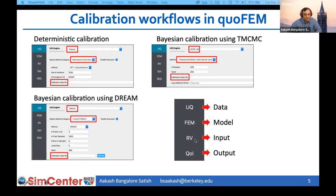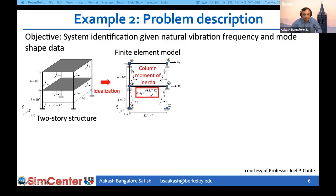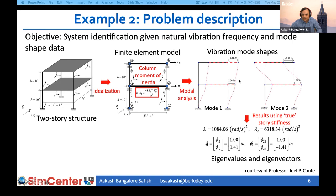In all calibration workflows, there are four components defining the problem: the calibration data provided in the UQ panel, the model defined in the FEM panel, inputs defined in the RV panel, and outputs in the QI panel. Today's example uses a two-story building structure modeled as a 2D shear building in OpenSees, with only two degrees of freedom and two natural modes of vibration from which we obtain eigenvalues and eigenvectors via modal analysis.